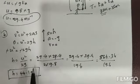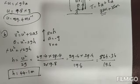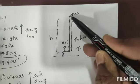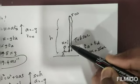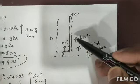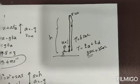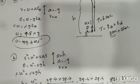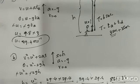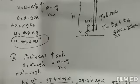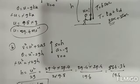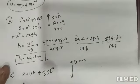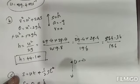Now for Part C: position after 4 seconds. The ball goes up for 3 seconds, so after 3 seconds it is at the top. The 4th second puts it 1 second into the descent. Using the formula s = ½gt² for downward travel from the top, where initial velocity is considered 0.